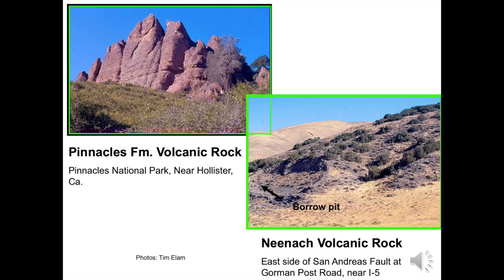In these two pictures, you might think that there is little similarity between the Nienach rocks and the Pinnacles rocks, but they have the same mineralogy, the same broken or brecciated texture, and formed at the same time 23 million years ago. These facts suggest that they came from the same volcano at the same time. The rocks separated an average of about three quarters of an inch per year, but separation only occurred during major earthquakes.